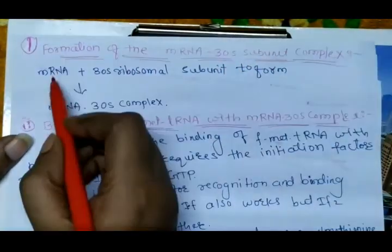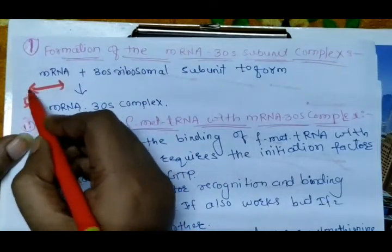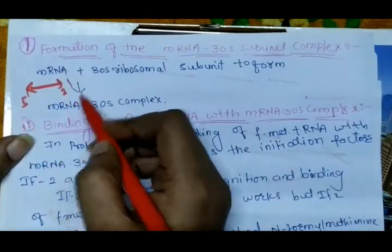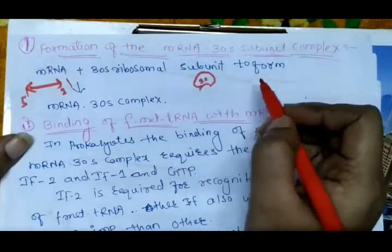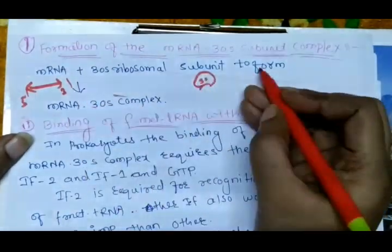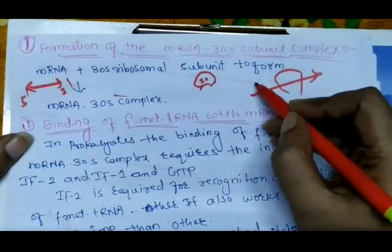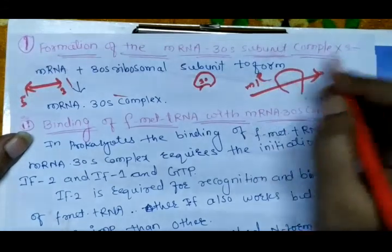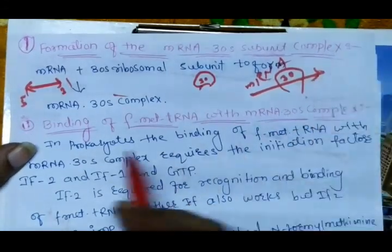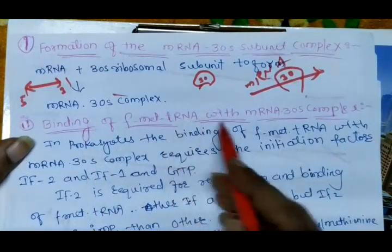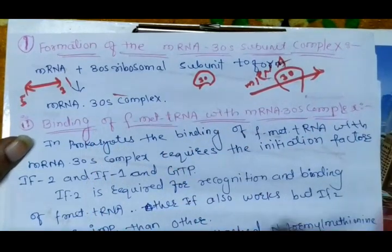The mRNA runs in the 5' to 3' direction. The 30S ribosomal subunit and the mRNA come together to form the mRNA–30S complex. The next step is the binding of the formyl-methionine tRNA to this mRNA–30S complex.